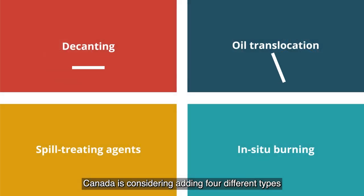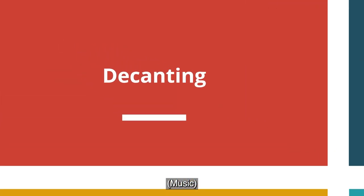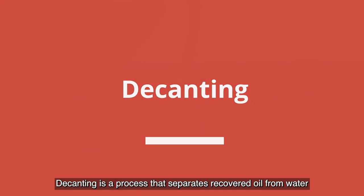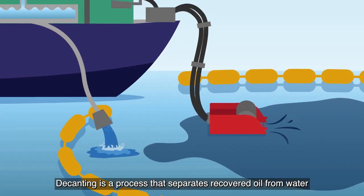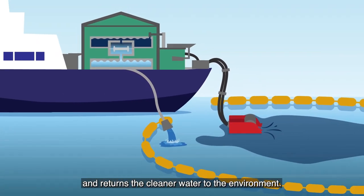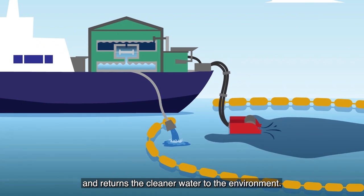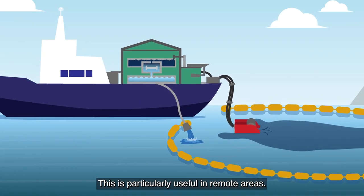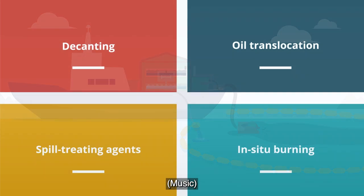Canada is considering adding four different types of alternative response measures. Decanting is a process that separates recovered oil from water and returns the cleaner water to the environment. This is particularly useful in remote areas.